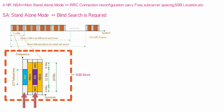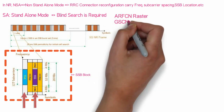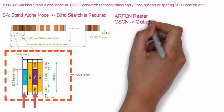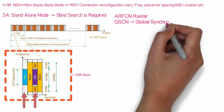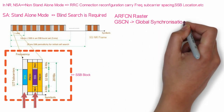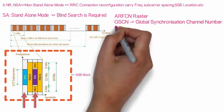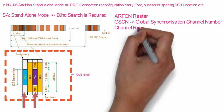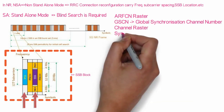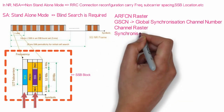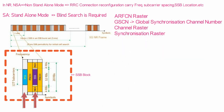You need to search SSB based on the ARFCN raster. This brings up the concept of Global Synchronization Channel Number (GSCN), channel raster, and synchronization raster. What is the channel number? What is channel raster? What is synchronization raster? What is GSCN? Many questions are coming up one by one.